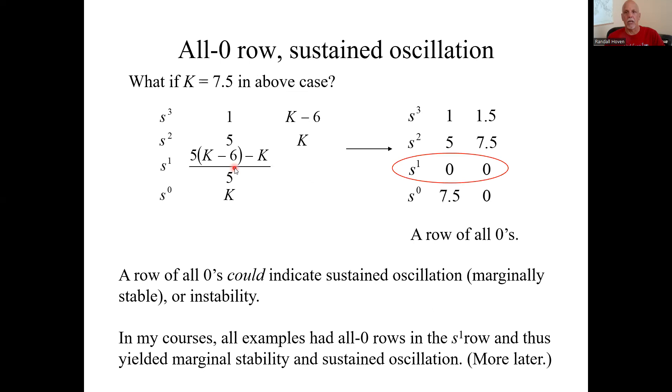Let's see what happens. If we put in K equals 7.5, this would be the Routh array. You get a row of all zeros. And that's a special case that I'm going to cover in more detail a few charts away from here. In general, a row of all zeros could indicate sustained oscillation, meaning marginally stable, or it could mean instability.